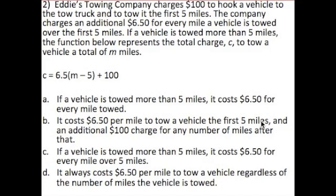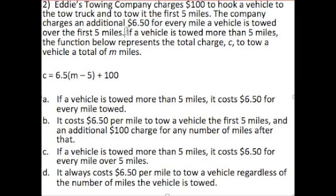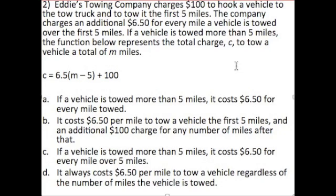Here's one for you to try on your own — go ahead and pause the video, work it out, and press play when you're ready to see the answer. Eddie's Towing Company charges $100 to hook a vehicle to the tow truck and tow it for the first 5 miles — that's an initial fee. The company then charges $6.50 for every mile the vehicle is towed over 5 miles. If a vehicle is towed more than 5 miles, the function represents the total charge C to tow a vehicle a total of M miles. C should be the total charge, and M is the total number of miles being towed.